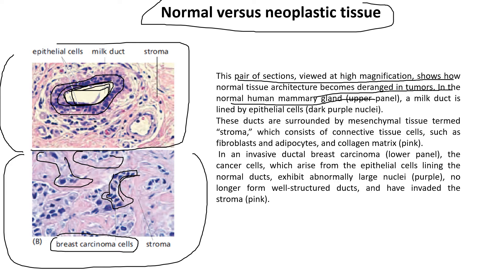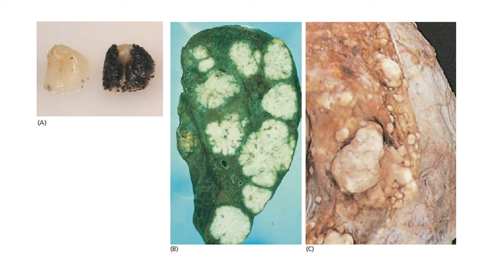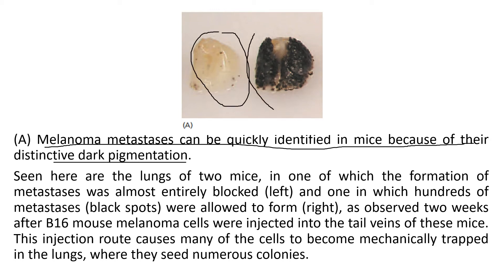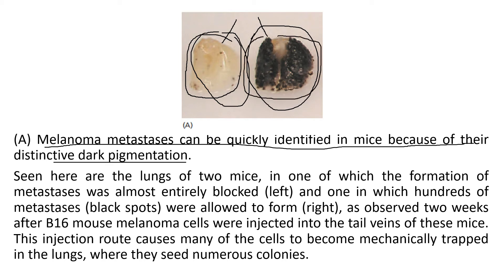Moving on, there are three pictures I'll be explaining. The first picture shows melanoma metastasis, which can be quickly identified in mice because of their distinctive dark pigmentation. These two body organs are lungs of a mouse. The first is a normal lung and the second is an infected, cancerous lung. You can easily spot the difference — a normal lung looks clean whereas the cancerous lung shows development of black spots.